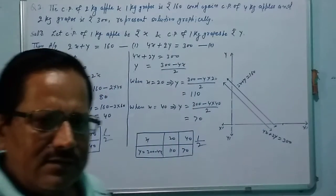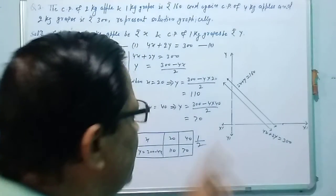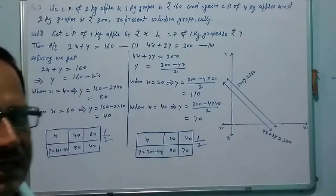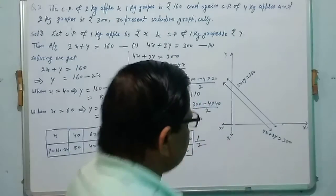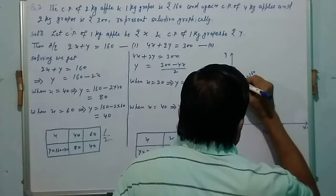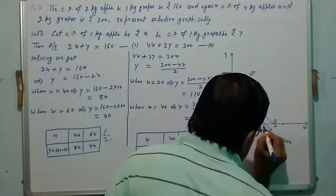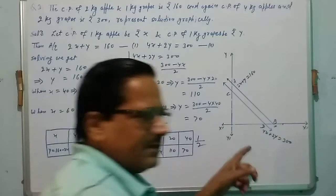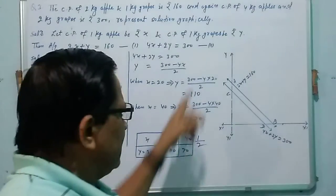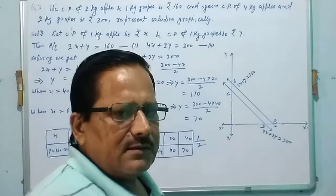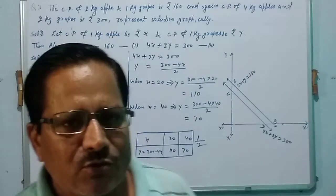That is AB and CD are two lines of these equations. And they are parallel. That means they have no common solution.